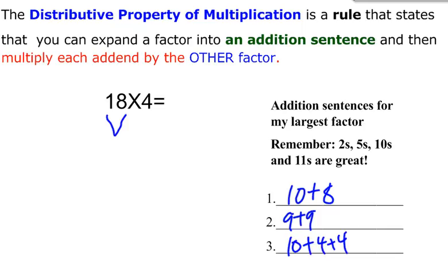They learned that 2s, 5s and 10s and 11s are great because they can skip count quickly with those factors when they multiply.